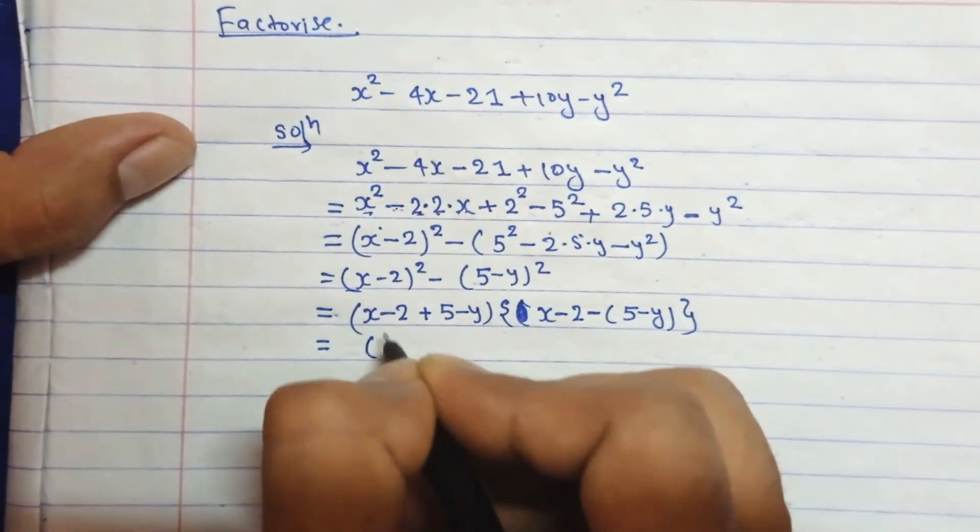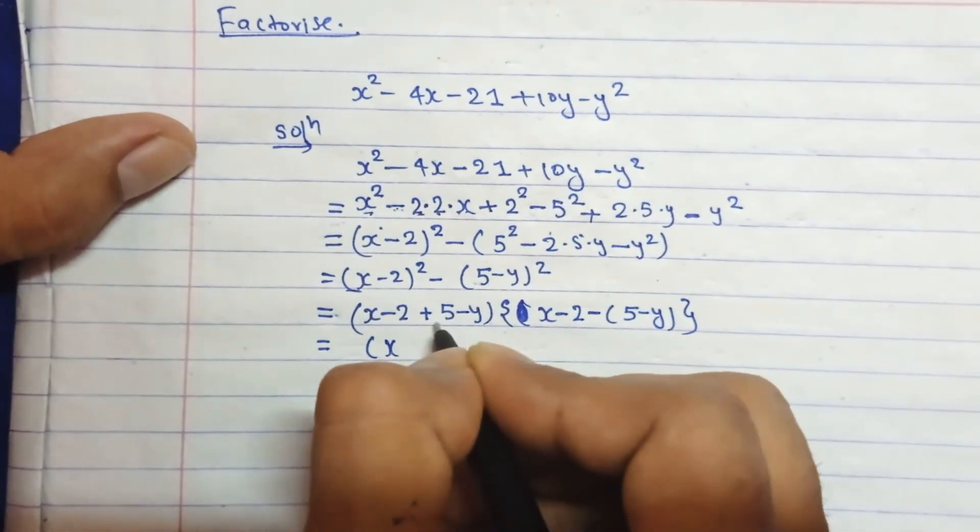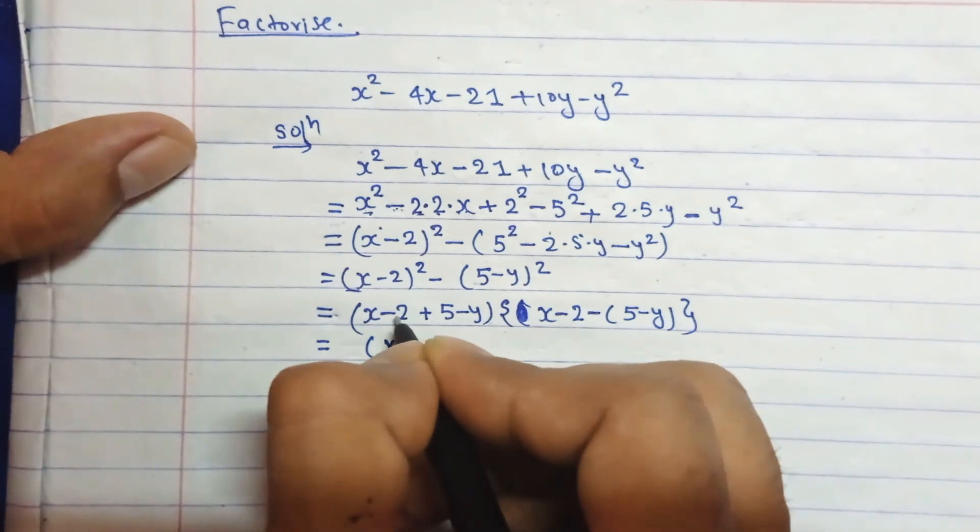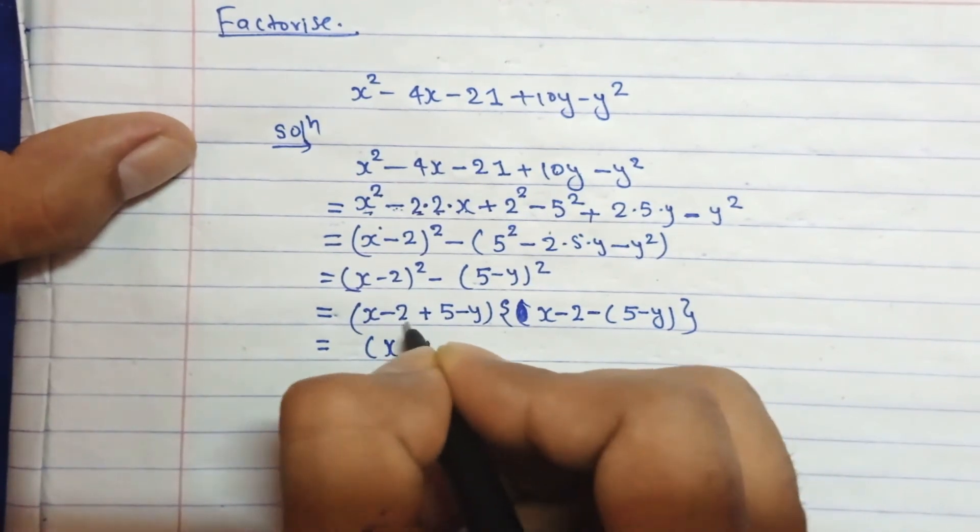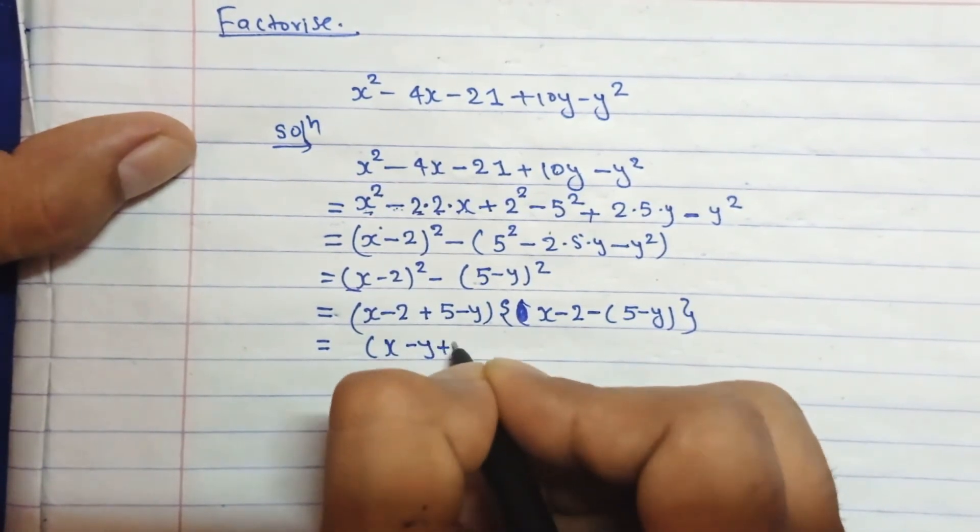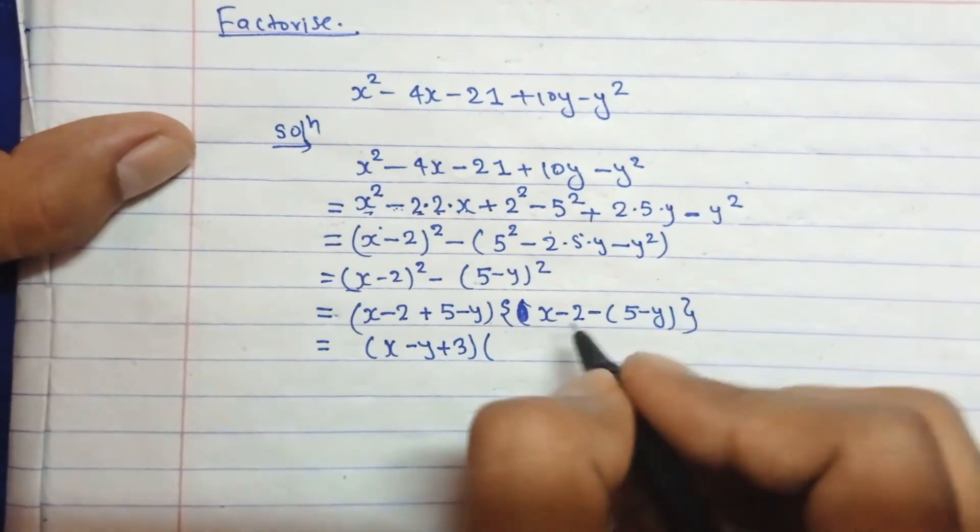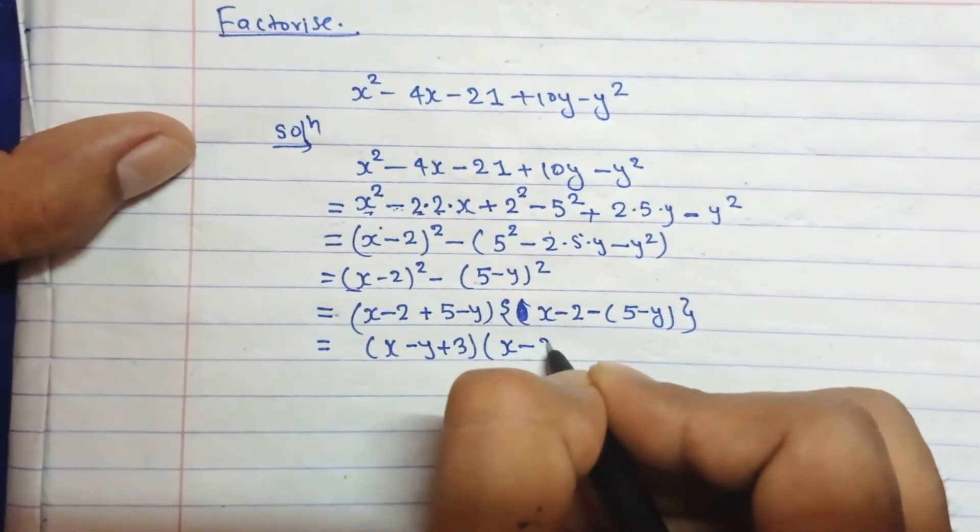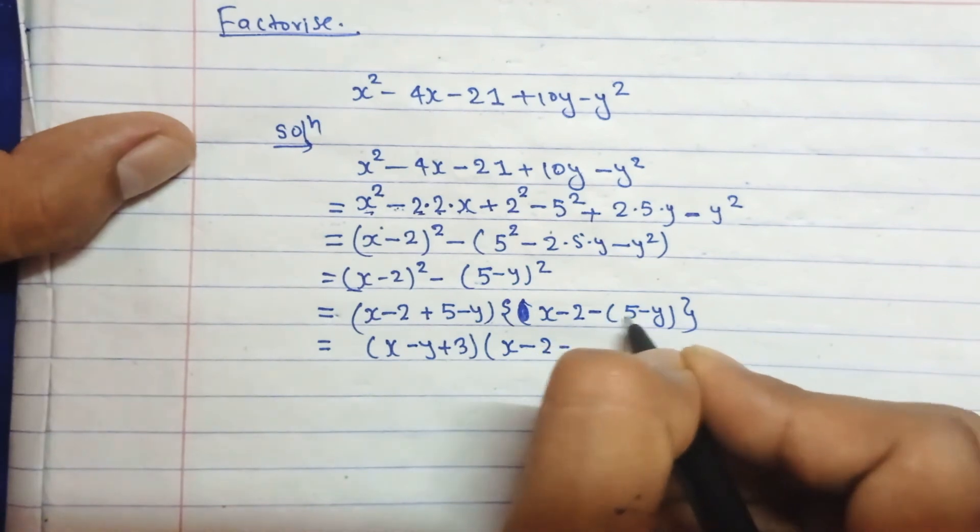Therefore this can be written as (x - y), and if you add this, this will become -2 and +5 is +3, times you can write here (x - 2) - if you open this bracket by multiplying by minus, -5 + y.